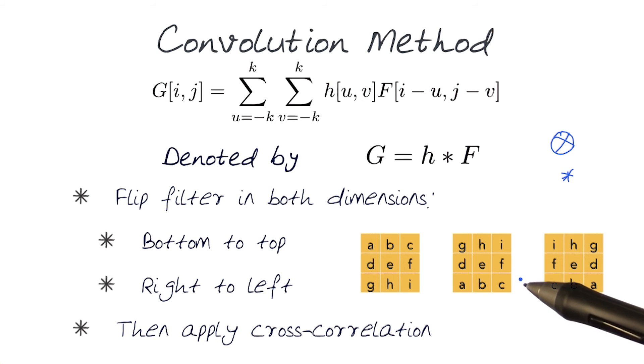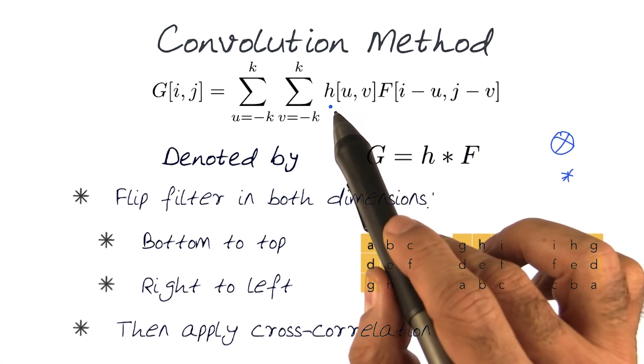One, a flip in the horizontal axis. So the top row would be switched with the bottom. And then the second flip where we will actually do a flip from the right to left, where the right row and the left rows would be swapped. So that would be a complete flip to generate a new kernel. And if you applied this kernel in this formulation, this would become equivalent to a cross correlation method.